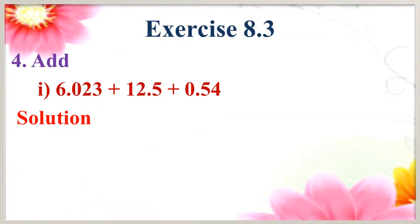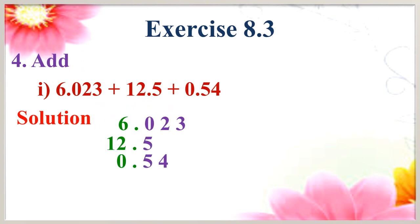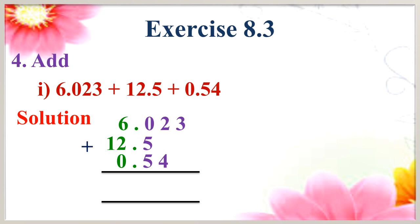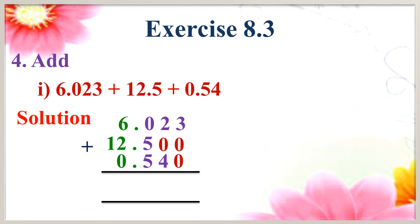The fourth problem: add 6.023 plus 12.5 plus 0.54. Solution: write all decimal numbers in vertical position — 6.023, 12.5 and 0.54. Now add these three decimal numbers. Are they like decimals? No. So now we are going to make them like decimals. Then add all the numbers — what is the answer?